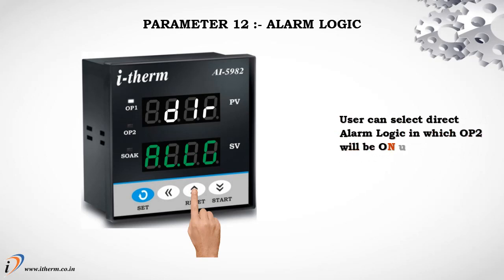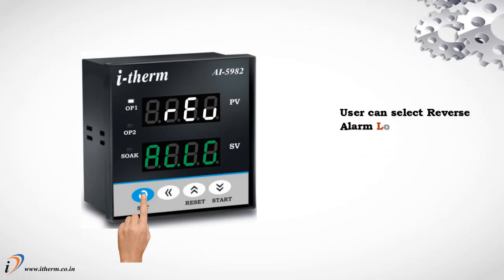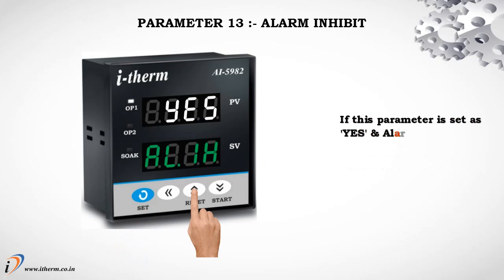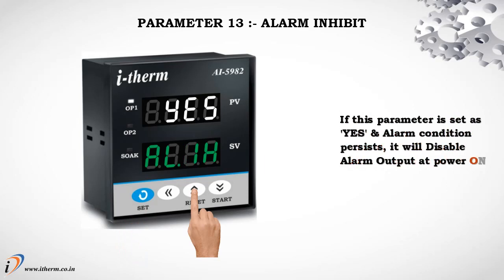Parameter 12: Alarm Logic. The user can select direct alarm logic, in which output 2 will be on under alarm condition, otherwise off. Parameter 13: Alarm Inhibit. If this parameter is set to Yes and an alarm condition persists, it will disable the alarm output at power on.